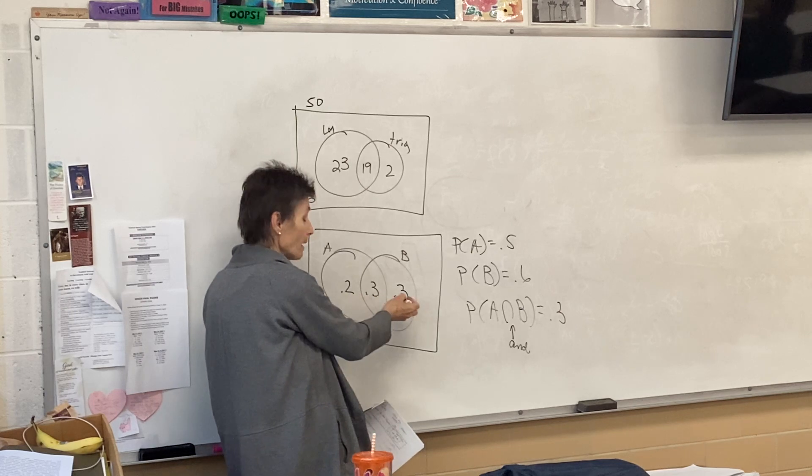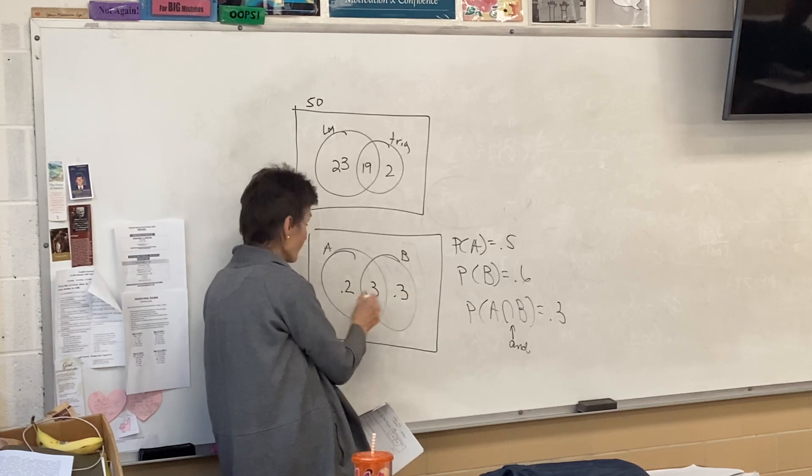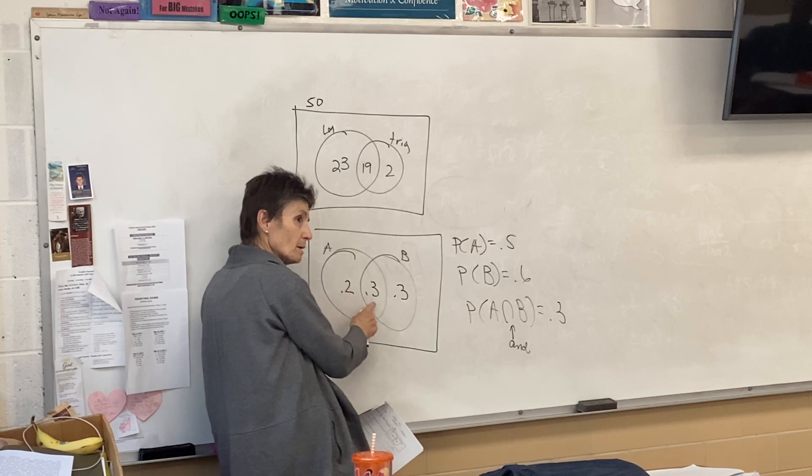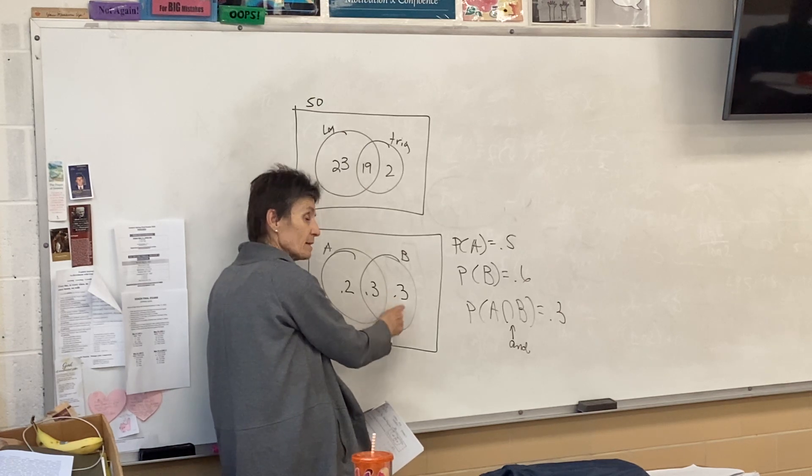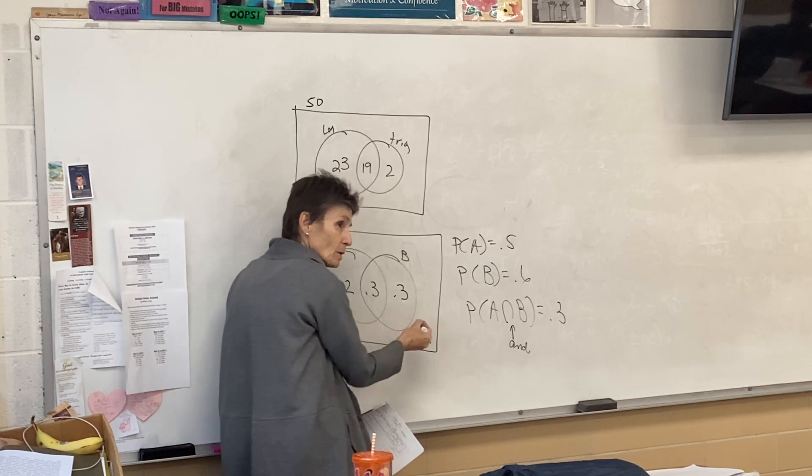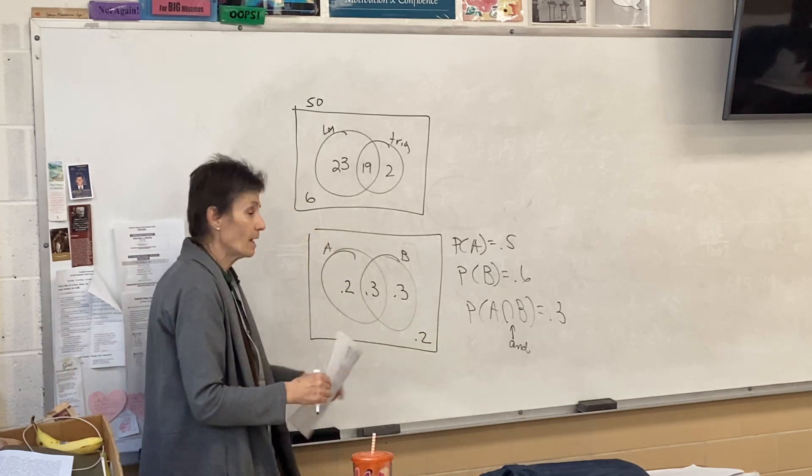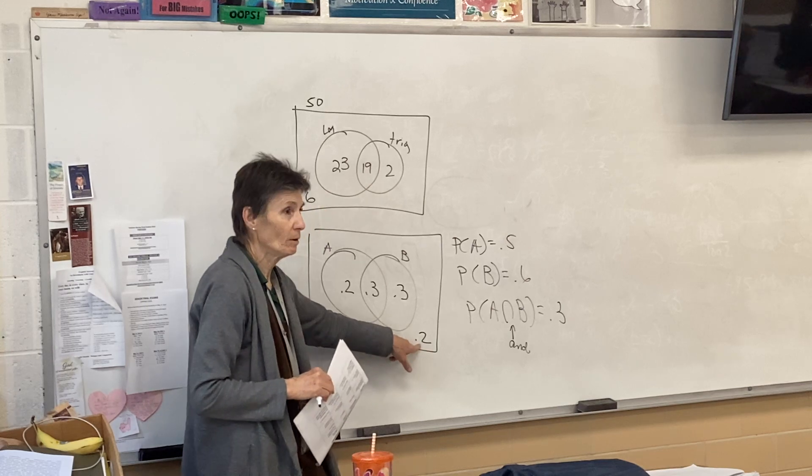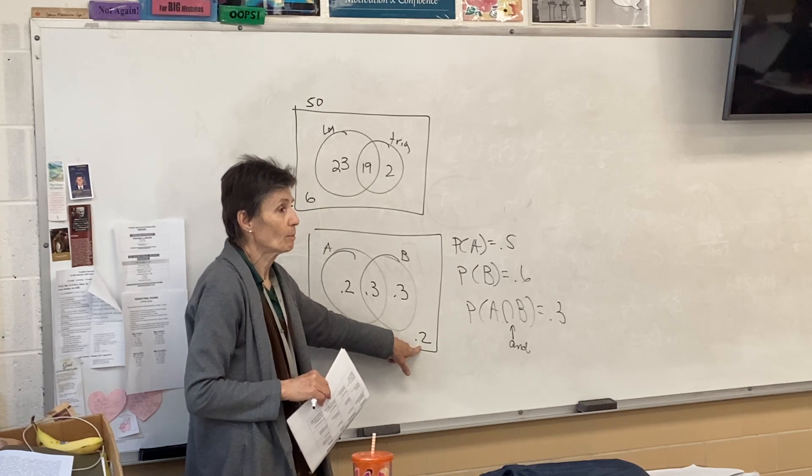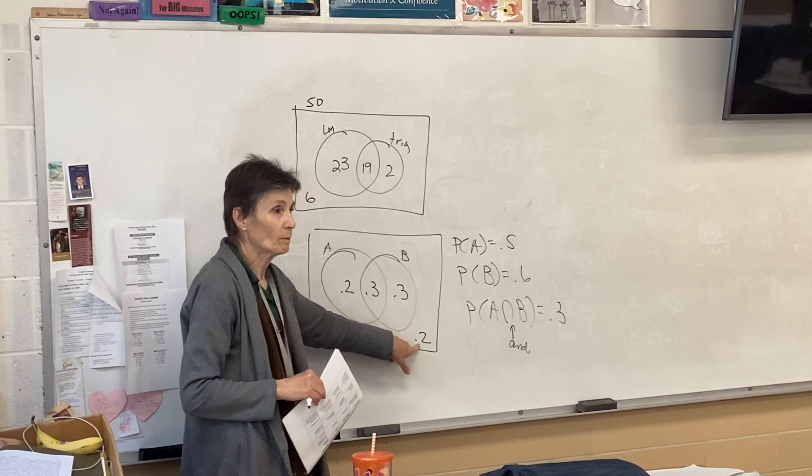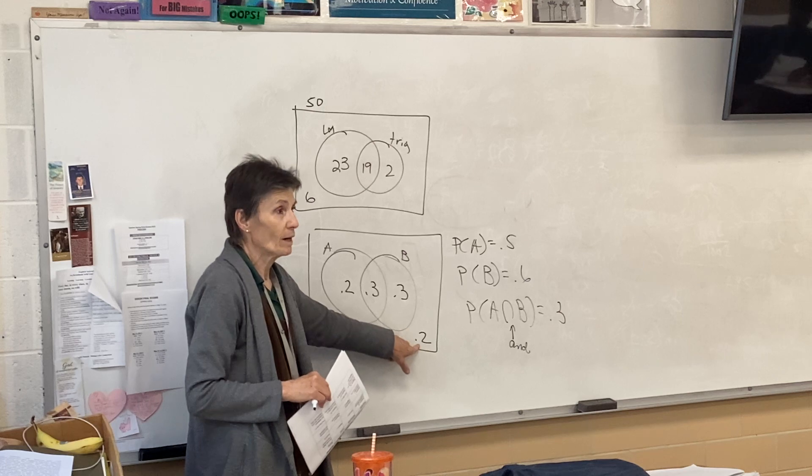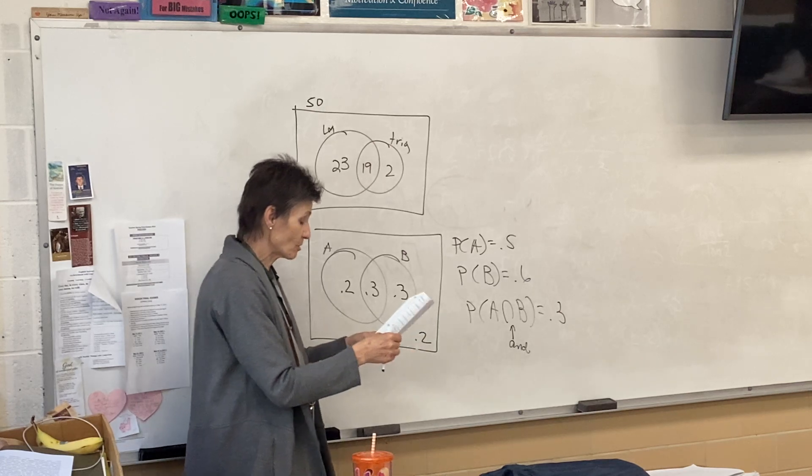So these are the people that like apples and bananas. So where do they go? We start with them. They go in the middle. Then we can work backwards. The whole apple ball is 0.5. Right? So we've got 0.3, then this has to be 0.2. And the whole banana ball is 0.6. So this has to be 0.3. Now, what do those add up to? We have 20%. Remember, these are probabilities. So we have 20%, 30%, and 30%. That's only 80%, which means there's 20% out here.